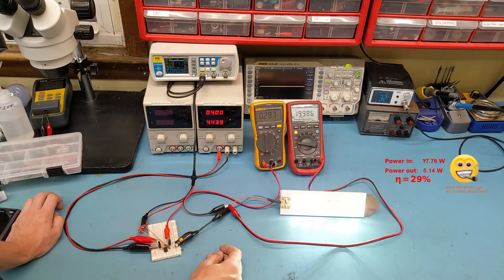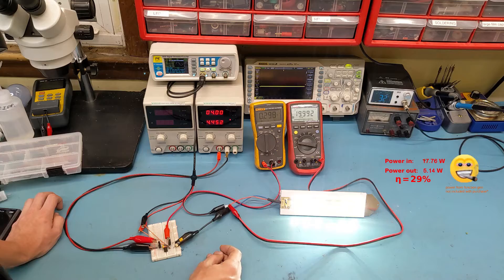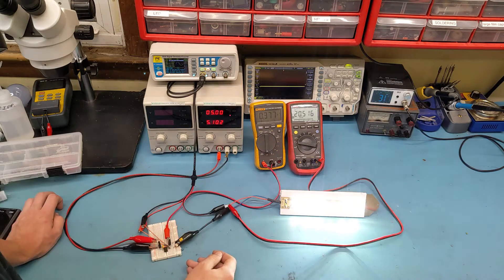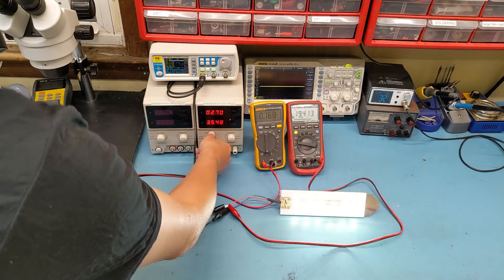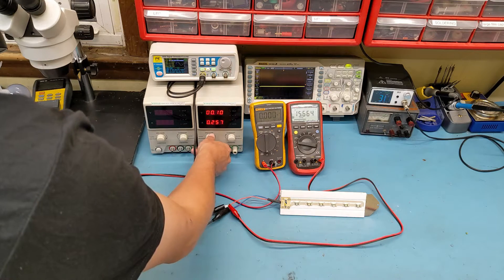At around 4 volts of input, we are now looking at around 4.4 amps of current draw. And now we pretty much maxed out our power supply. We can't really go any higher than this. So before we burn up our transistor, I'm going to go ahead and turn this off.